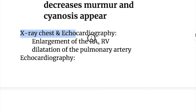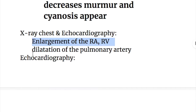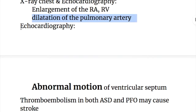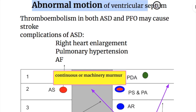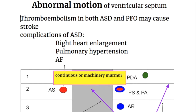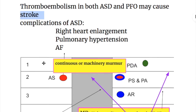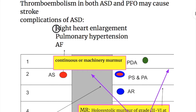On X-ray and echocardiography, there is enlargement of the right atrium and right ventricle and dilatation of the pulmonary artery. Echocardiography also shows abnormal motion of the ventricular septum. There is thromboembolism in both ASD and patent foramen ovale that may cause stroke. Other complications of ASD include right heart enlargement, pulmonary hypertension, and atrial fibrillation.